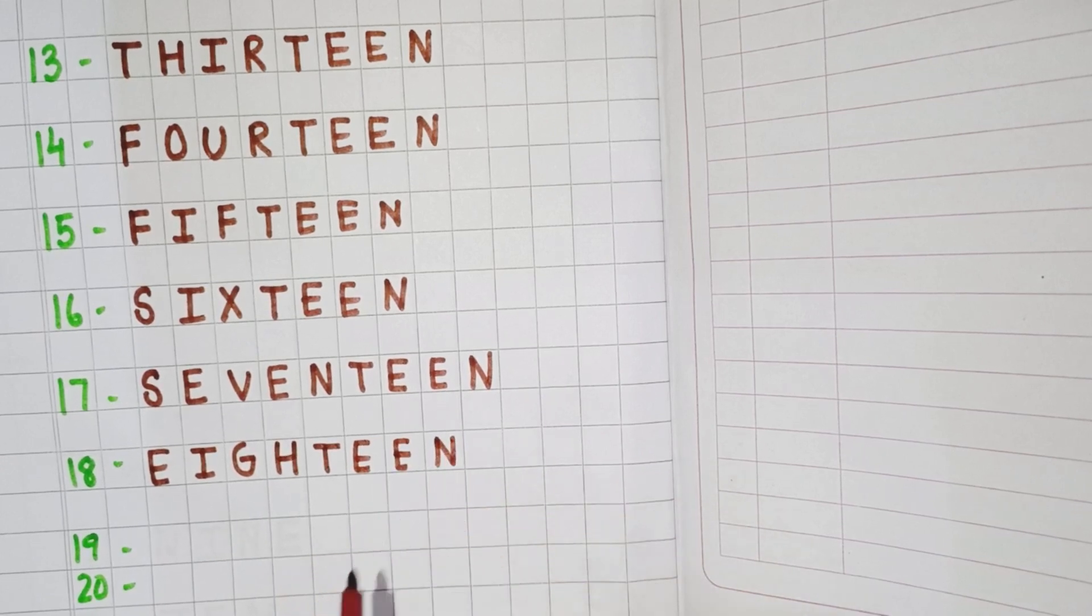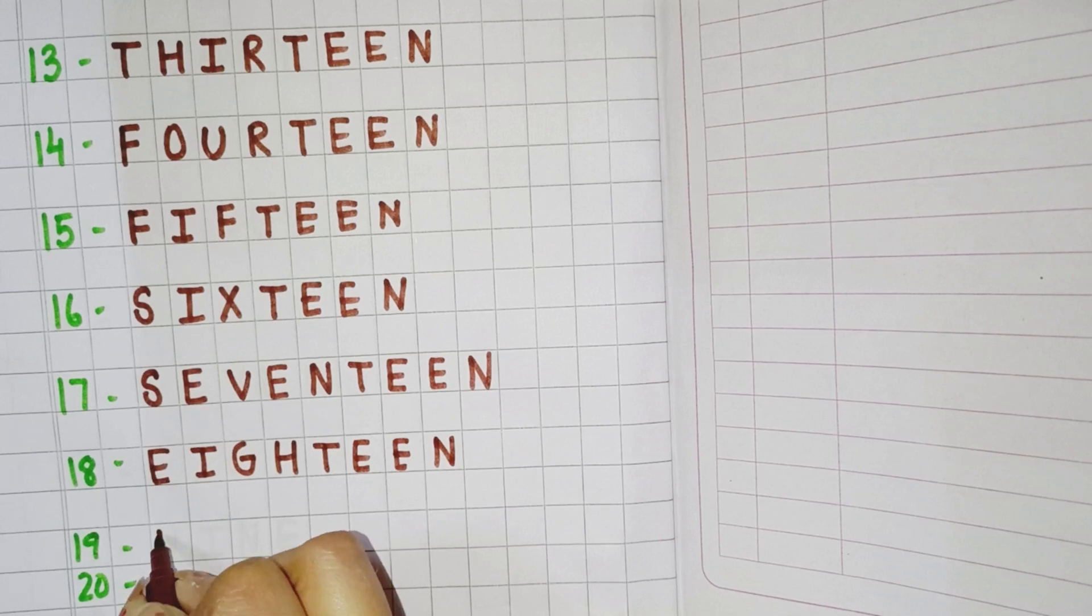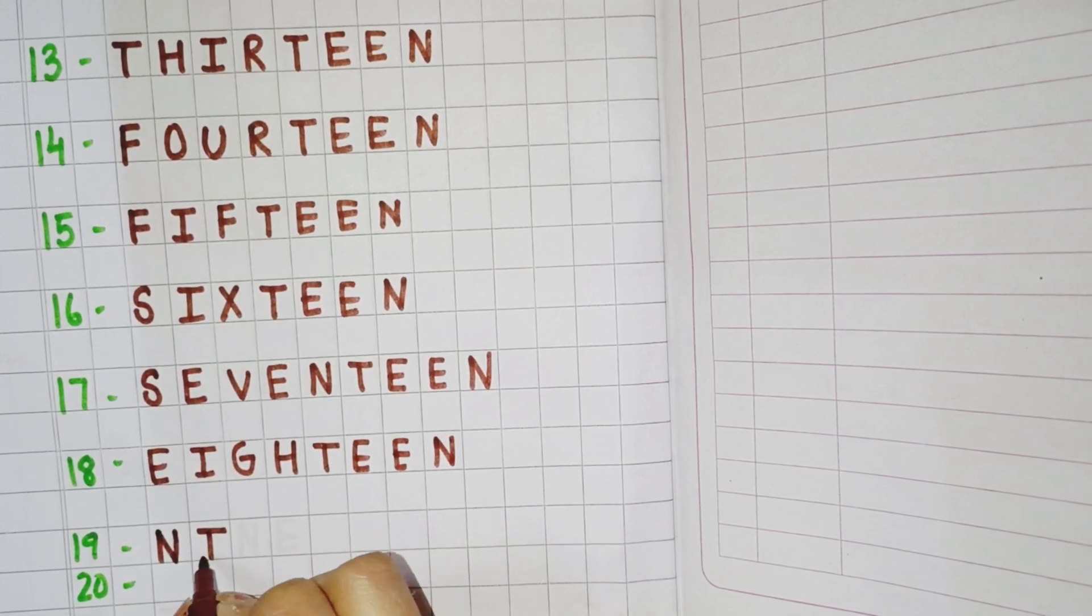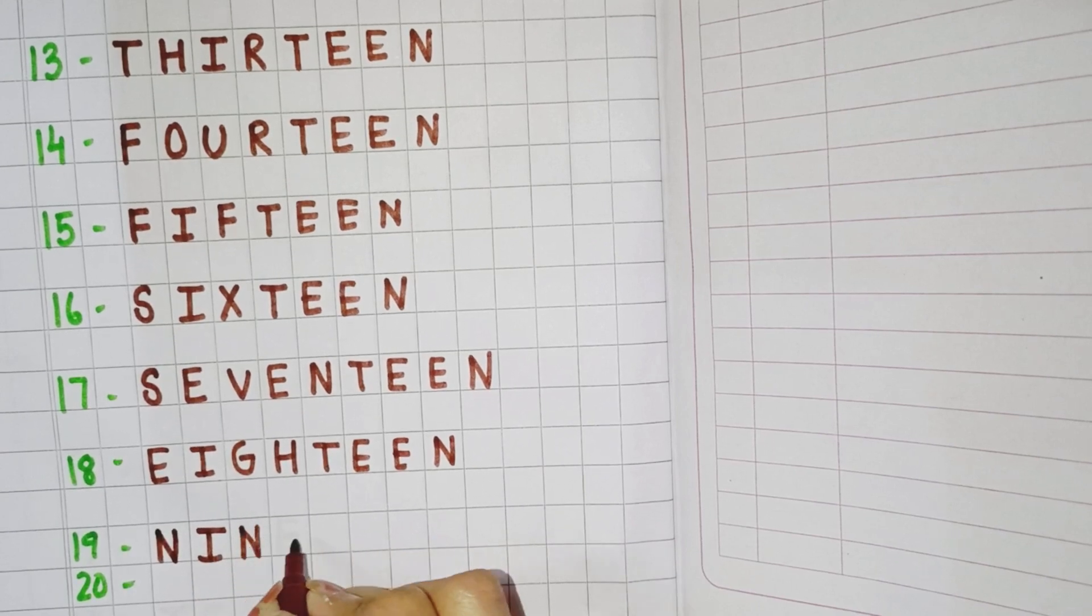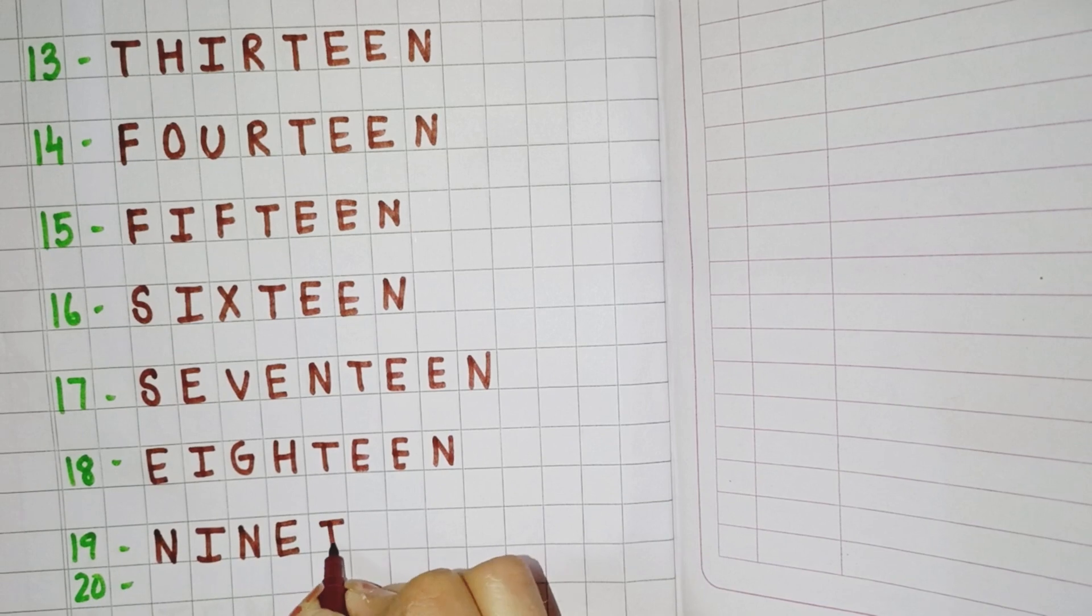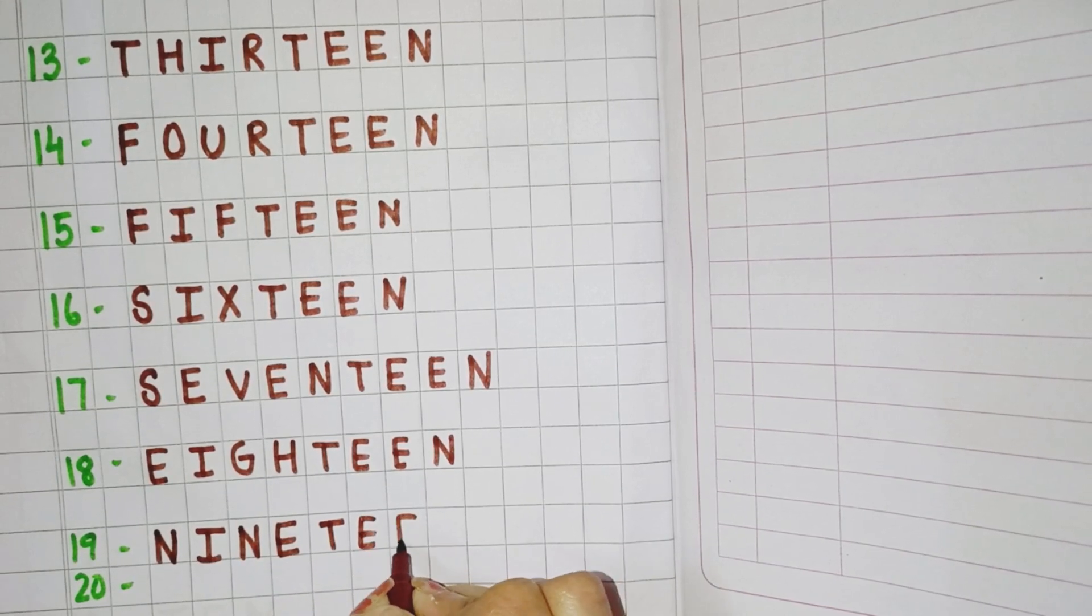Now next is 19. So you will write the spelling of 19. N, I, N, E, T, double E, N. Nineteen.